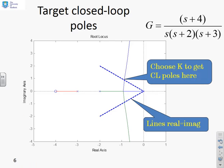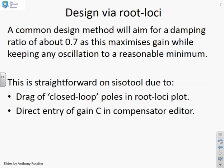For root loci design, we're trying to make the dominant closed-loop poles have a particular damping ratio. Specifically, you might aim for a damping ratio of about 0.7, which means the real and imaginary parts of the poles are the same. We're going to aim for 0.7 because this maximizes gain while keeping any oscillation to a reasonable minimum. Please remember that 0.7 is a somewhat arbitrary number and may be slightly different for a different context.